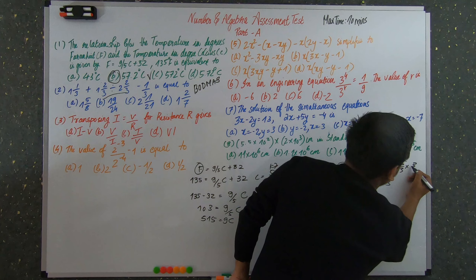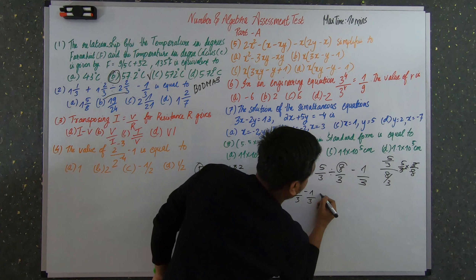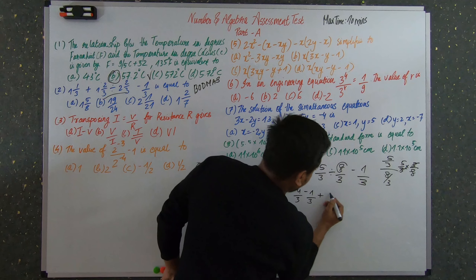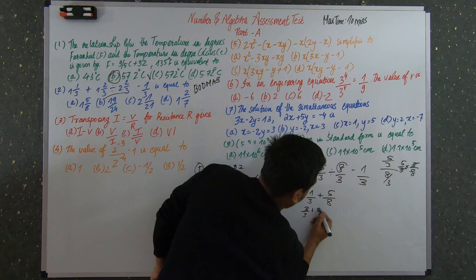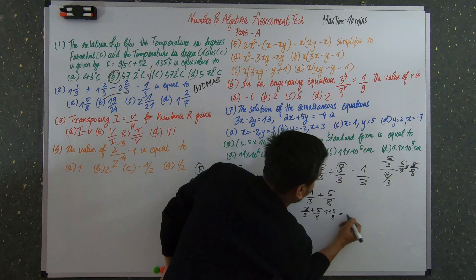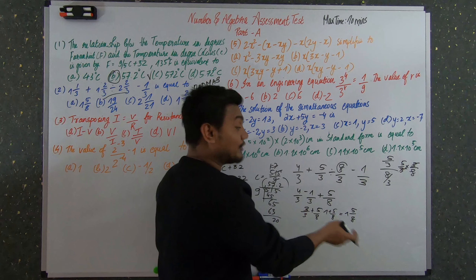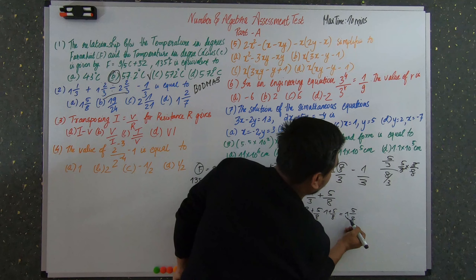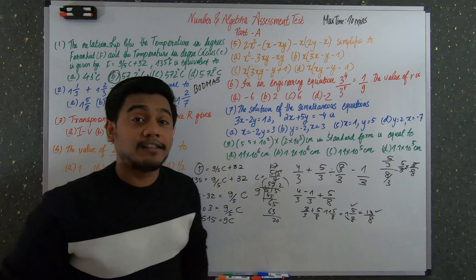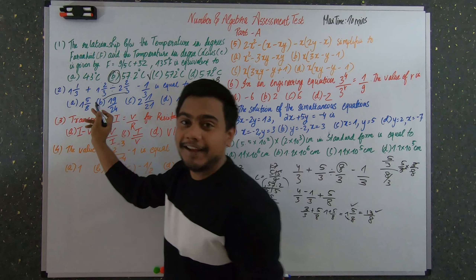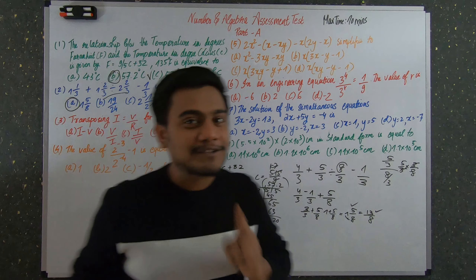We have (5/3) ÷ (8/3 − 1/3). Handle the division first: 5/3 ÷ 8/3 = 5/3 × 3/8 = 5/8. Then bring in the subtraction: the remaining terms give 3/3 − 1/3 + 5/8 = 1 + 5/8 = 1⅝, or as an improper fraction 13/8. The answer 13/8 or 1⅝ matches option A, so A is the answer for question two.